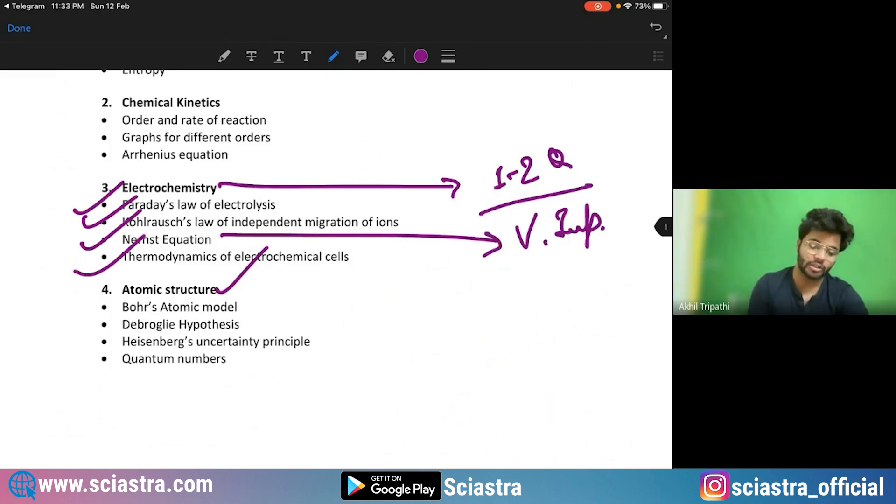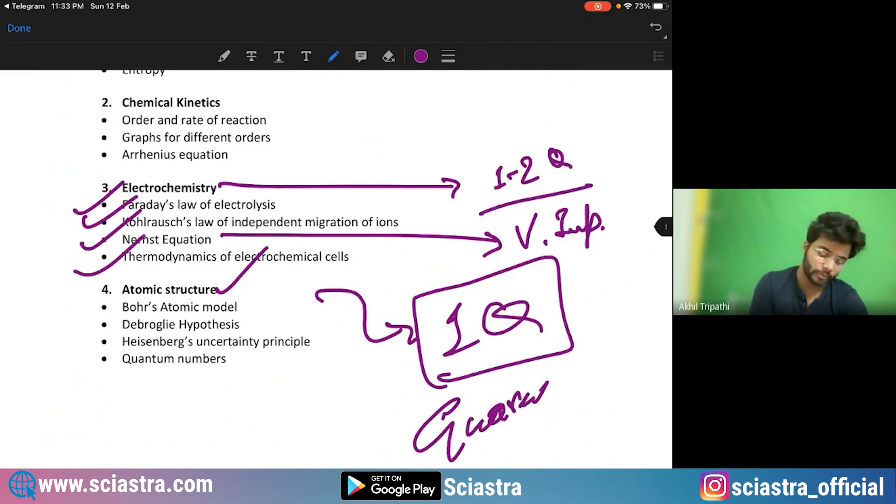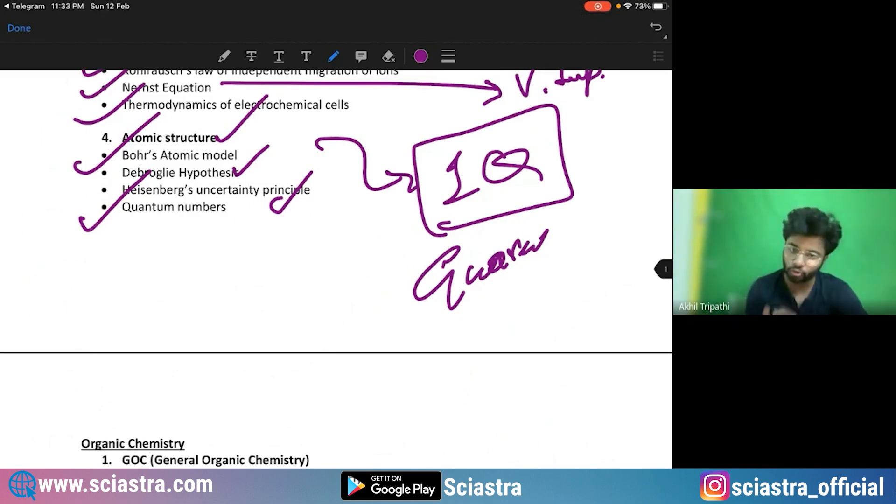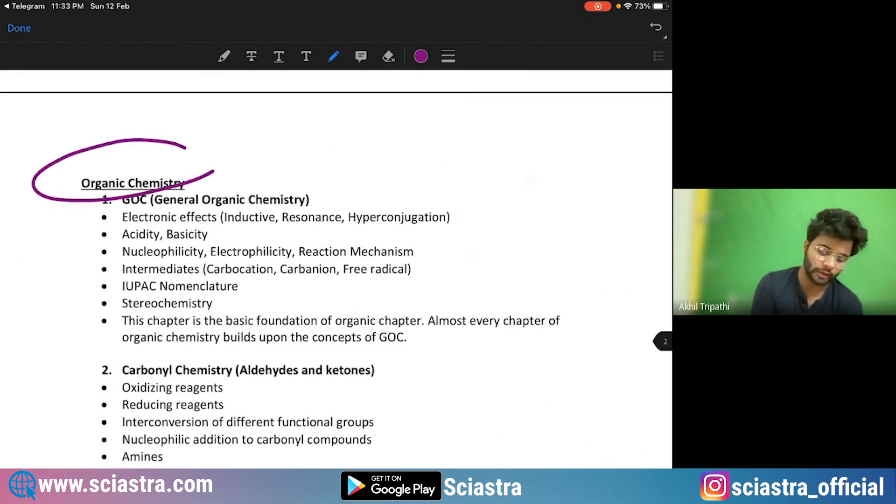Coming to atomic structure, again important topic. One question guaranteed. I'm telling you one question guaranteed from here, from either quantum numbers or Bohr's model or de Broglie wavelength or Heisenberg uncertainty principle. All of these are easy things. If you just study them, they are going to come and you will be able to crack it.